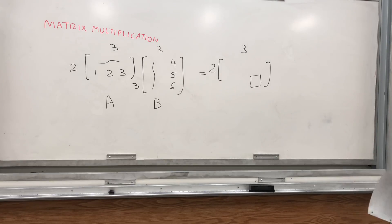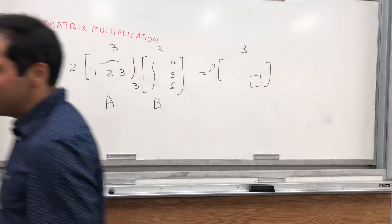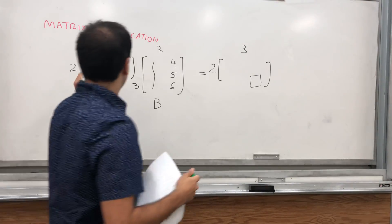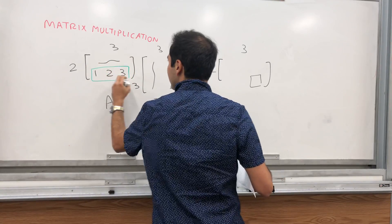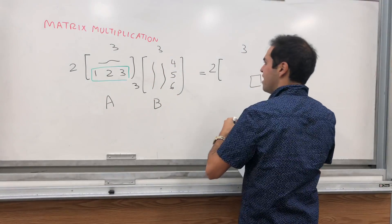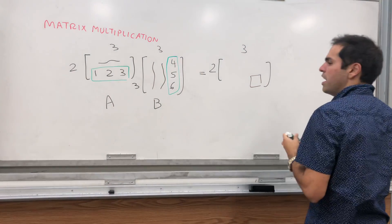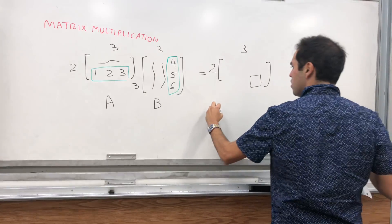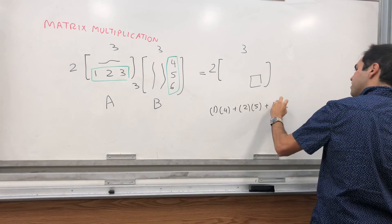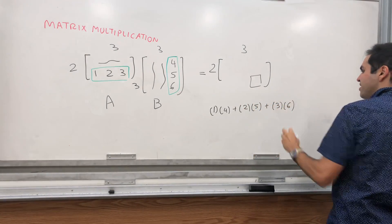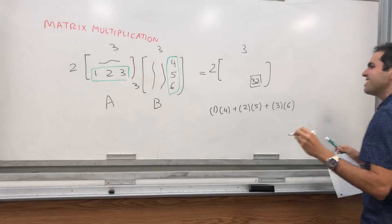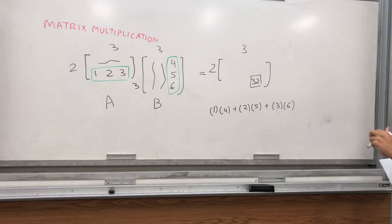The 2 comma 3rd entry: all you do is simply take the second row of A and the third column of B, and dot them. So you get 1 times 4 plus 2 times 5 plus 3 times 6, which gives you 32 — almost my age — and that's the 2 comma 3rd entry of AB.